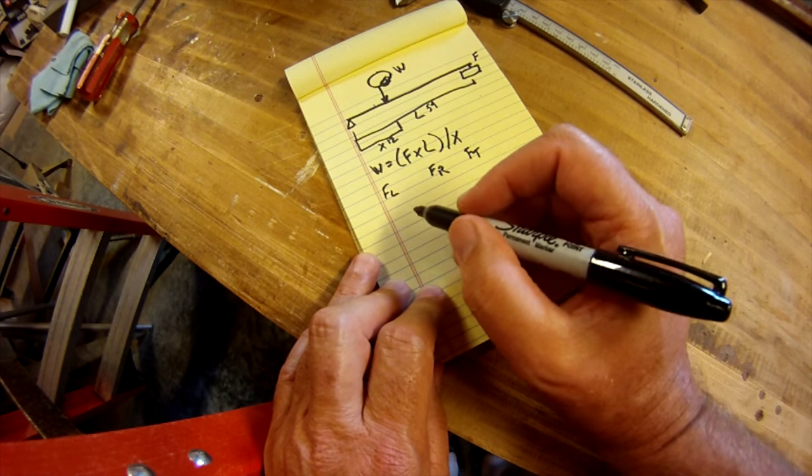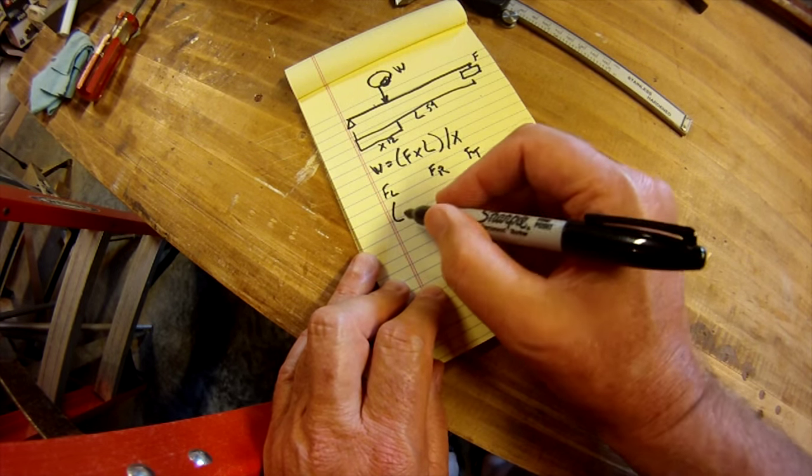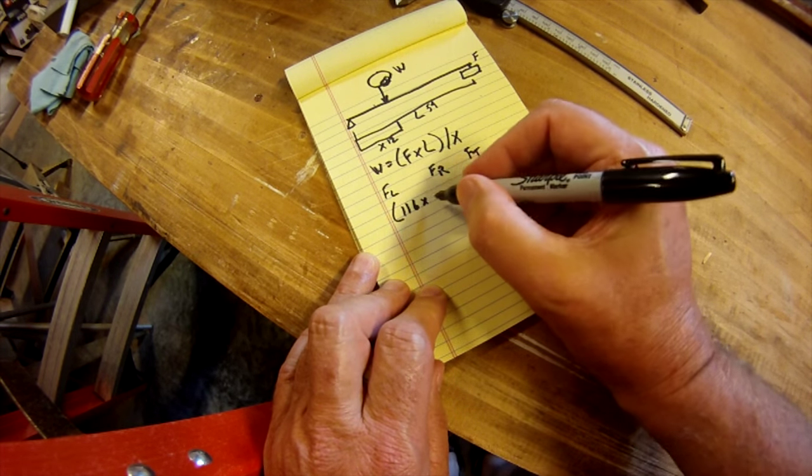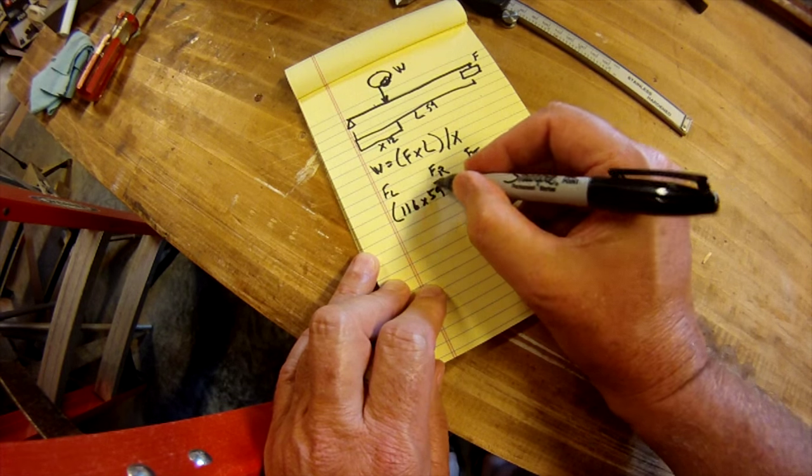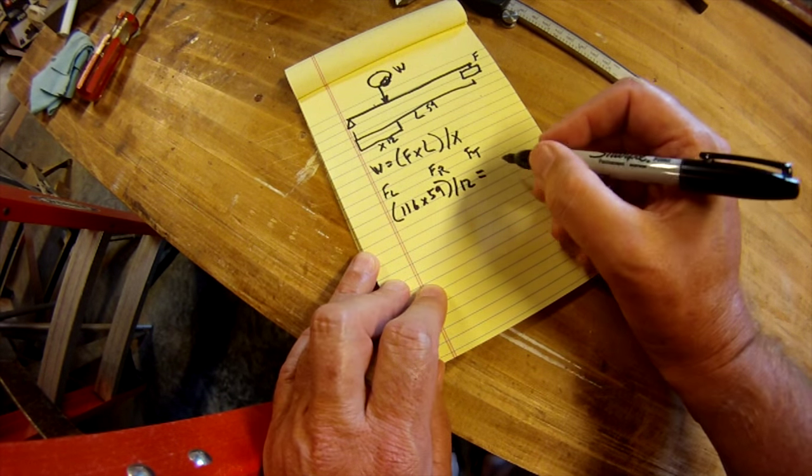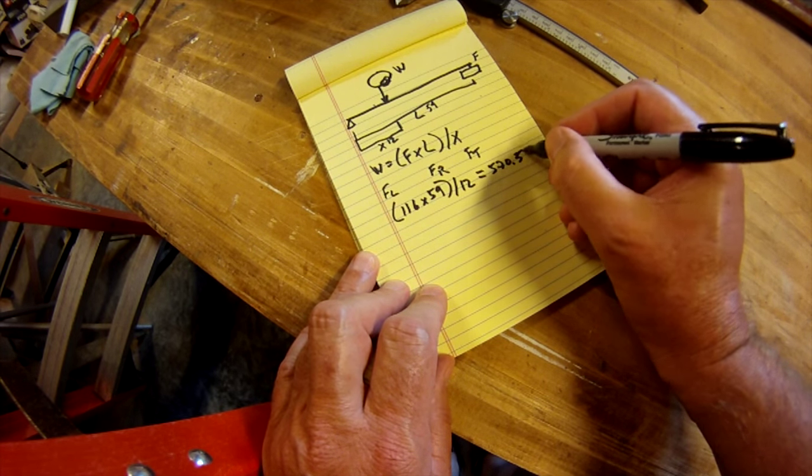In the first case, we will take F L. So that is 116 times 59 divided by 12 equals 570.33.